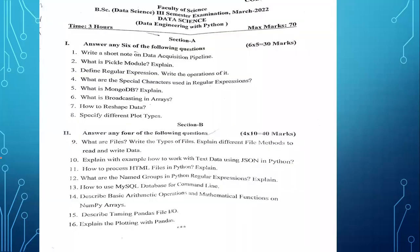Now looking at the previous year exam paper: write a short note on data acquisition pipeline. Next, discuss the pickle module, which we covered in our important questions. Define regular expressions — also covered. Special characters in regular expressions. What is MongoDB? Broadcasting arrays, reshaping arrays, plotting types — all of these important questions are covered in our list.